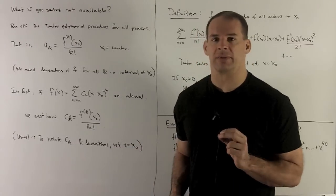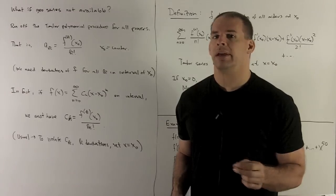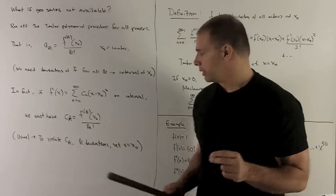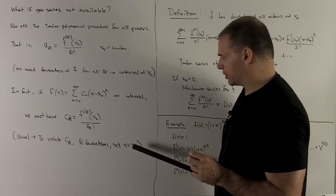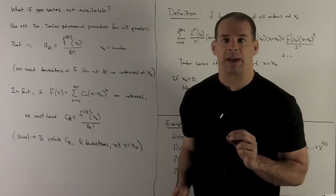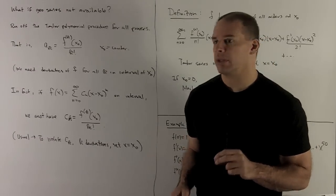Just the usual trick we did for Taylor polynomials. Take enough derivatives, you evaluate x equal to your center, and then you just divide by k factorial.